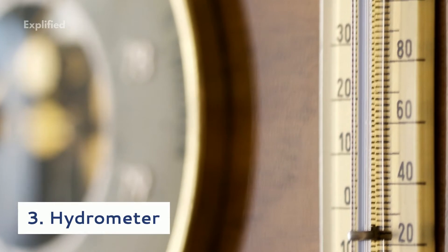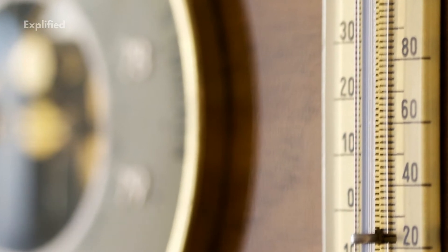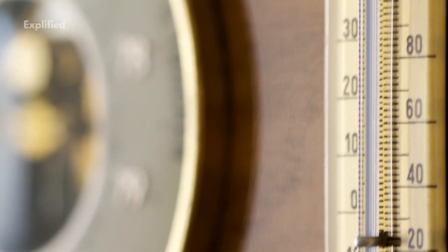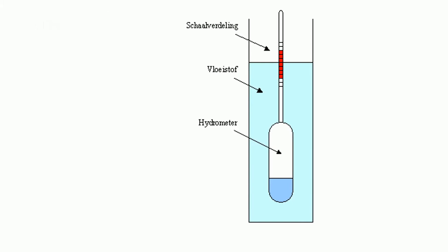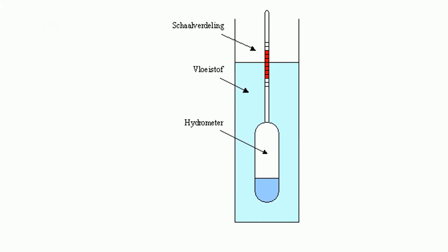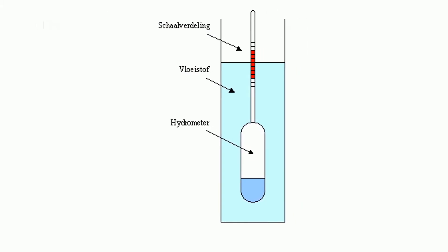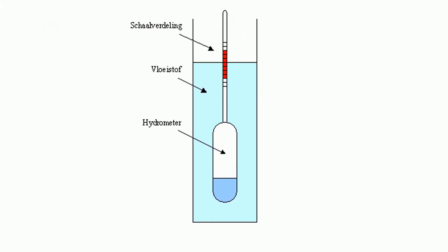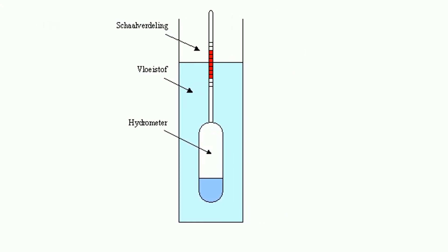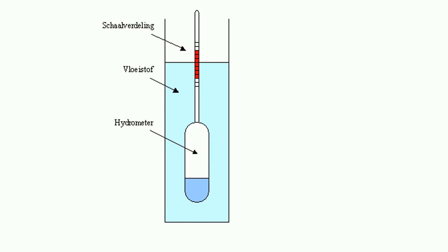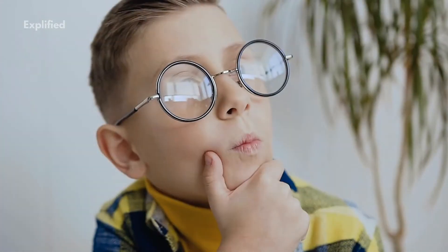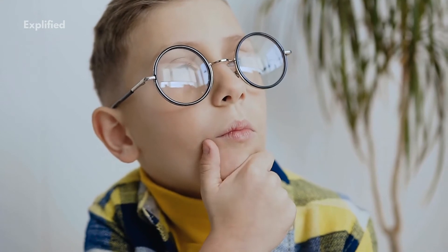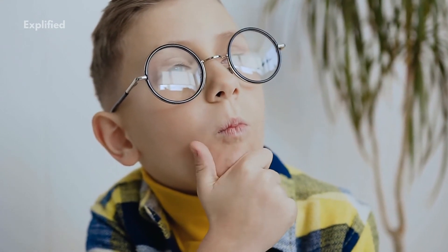A hydrometer is an instrument used for measuring the relative density of liquids. A hydrometer consists of lead shots which make it float vertically on the liquid. The lower the hydrometer sinks, the lesser is the density of the liquid. This is another interesting application of the Archimedes principle.